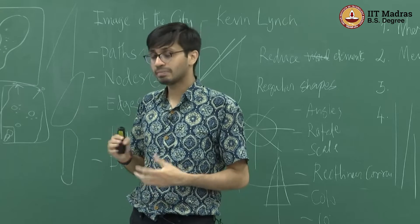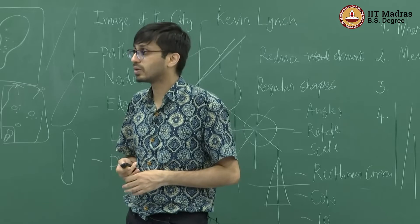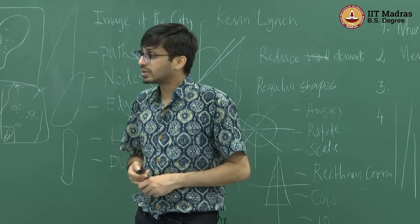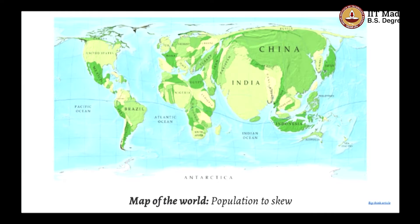There are a few other variations that might be more effective and we will look at that also. The other technique is called cartogram, and in this technique we tend to skew the map and take something that is familiar and make it slightly unfamiliar, and then try to visually represent data.